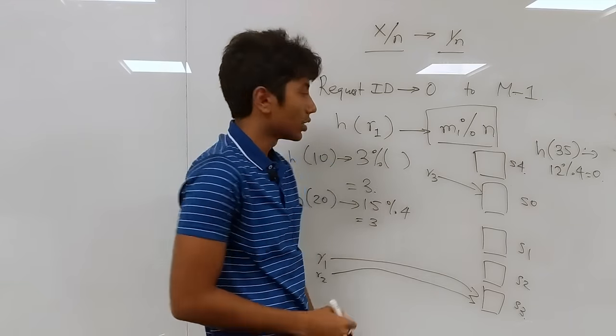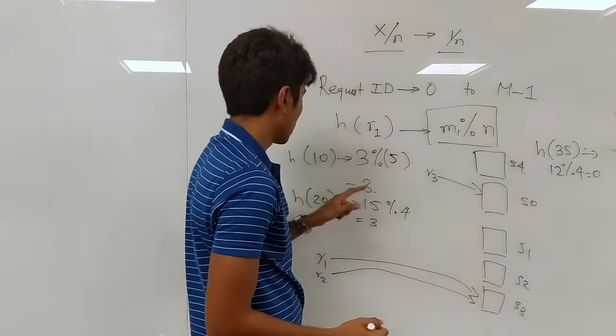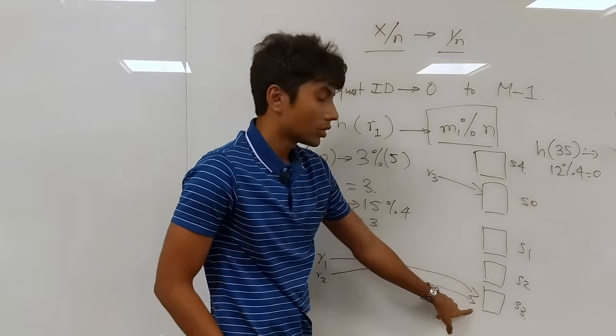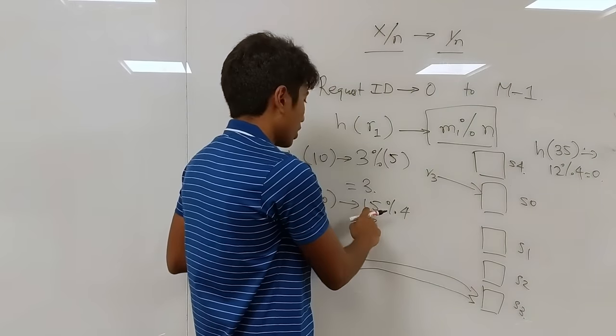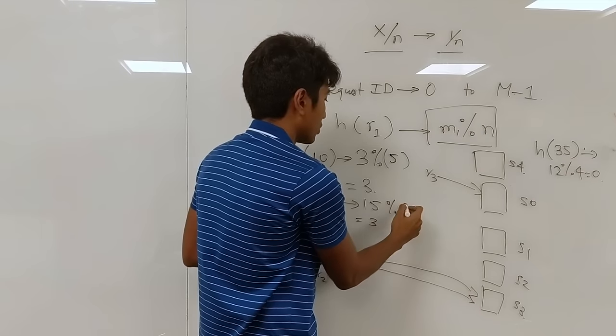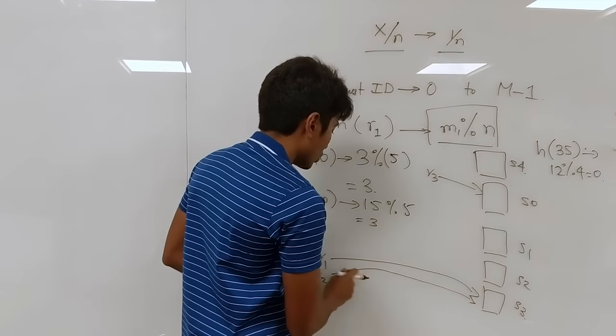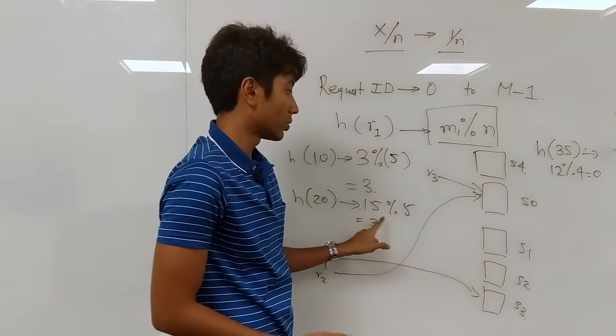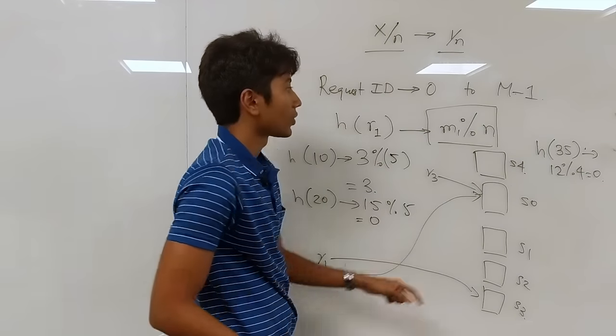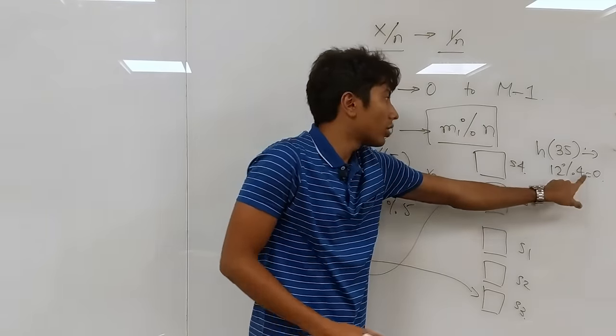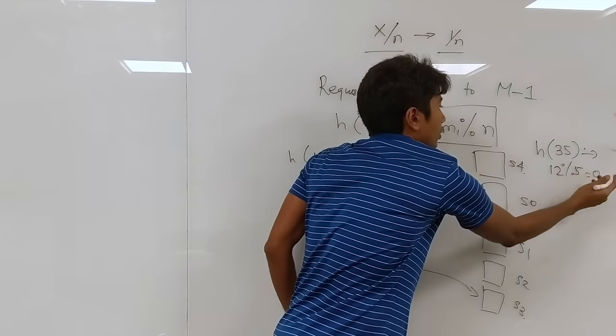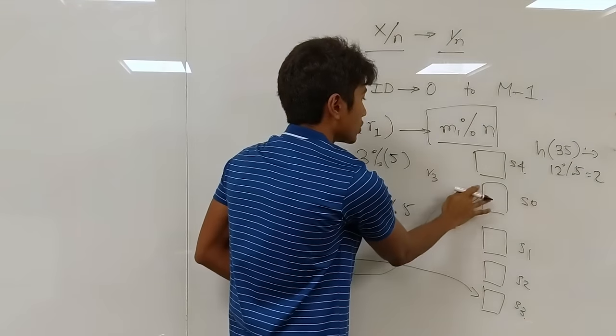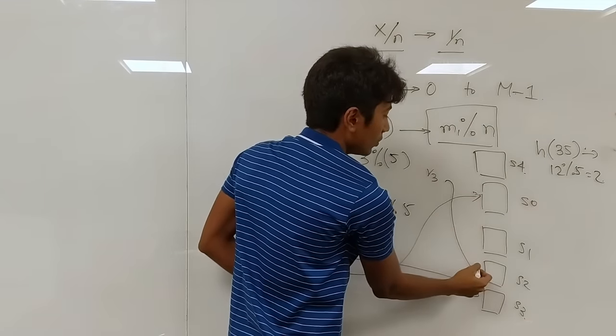Now you have in total five servers. So three mod five, R1 has to go to server three. So that's okay. What about 15 mod five? This has to change, it has to go to server zero, because this is zero. Right? What about this? 12 mod five. This is equal to two. So this request R3 again has to change and go to S2.